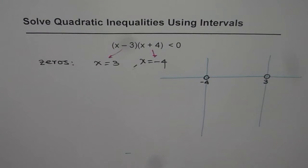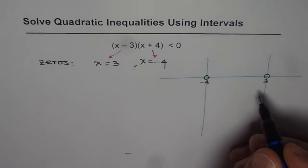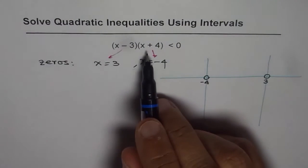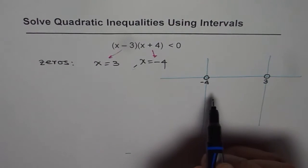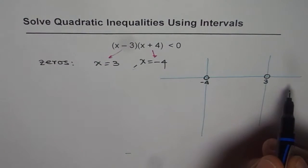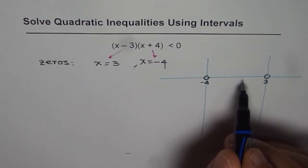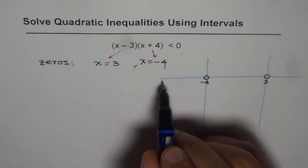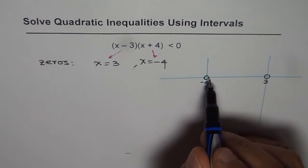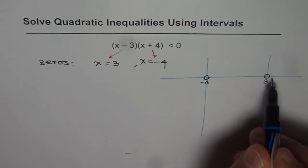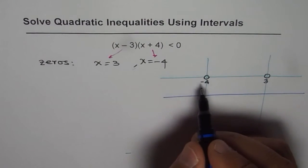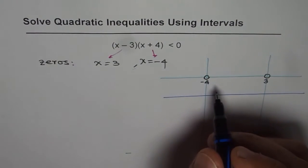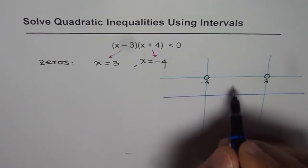Next step is that it is a good idea to take test points and test whether our function is positive or negative. These zeros in this case have divided the xy plane in three parts. One from minus infinity to minus 4, the other is from minus 4 to 3, and then from 3 to infinity. Now let us have test points in these three parts to check whether the function is positive or negative in these intervals.